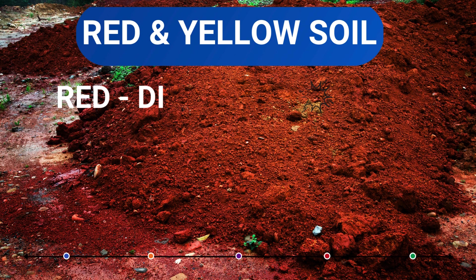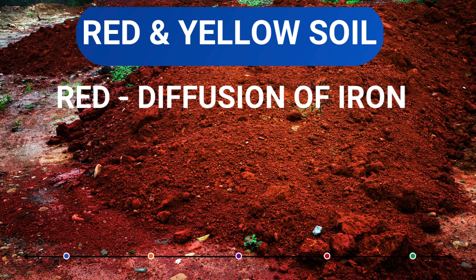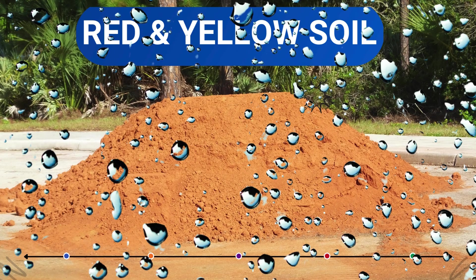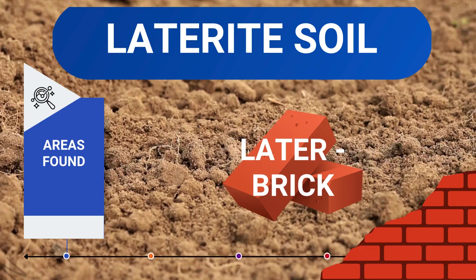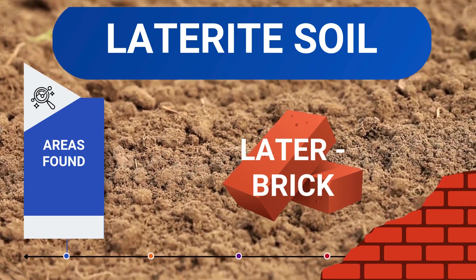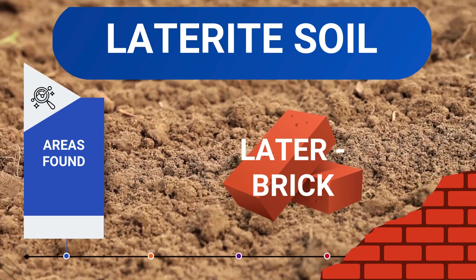The soil is red in colour due to diffusion of iron particles. However, when the soil gets hydrated, it turns yellow — and so the name Red and Yellow Soil.